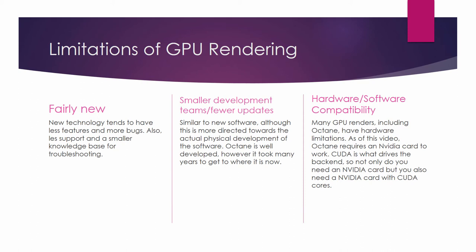Next is hardware and software compatibility. Many GPU renderers, including Octane, have hardware limitations. As of this video, Octane requires an NVIDIA card to work — CUDA is what drives the backend, so you need an NVIDIA card with CUDA cores. Most NVIDIA cards already have CUDA cores implemented. I have a small GT 710 — not even a GTX card — just a small office graphics card I use for displaying my monitor when using Octane, and I can render on that. It was only about $40, and it's actually pretty quick, just definitely not the best.